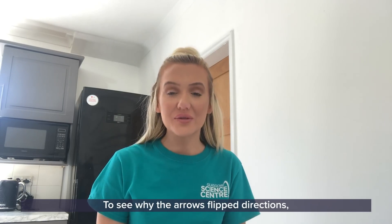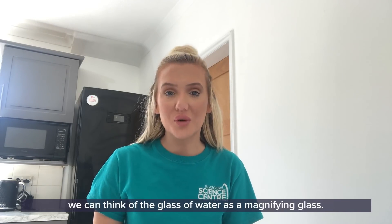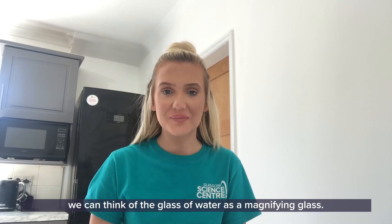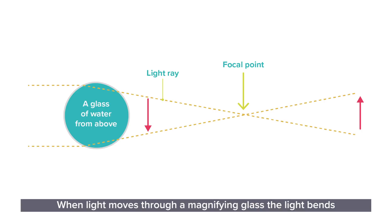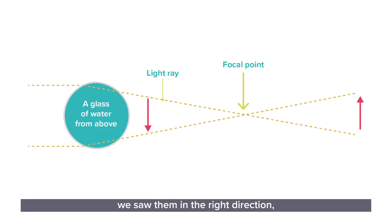To see why the arrows flipped directions we can think of the glass of water as a magnifying glass. When light moves through a magnifying glass the light bends towards the centre. Where all of the light comes together is known as the focal point. When the arrows were in front of the focal point we saw them in the right direction.